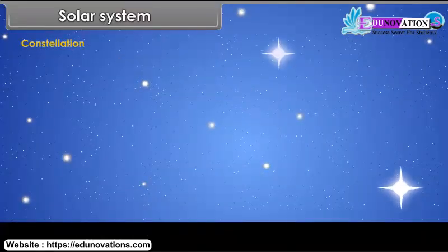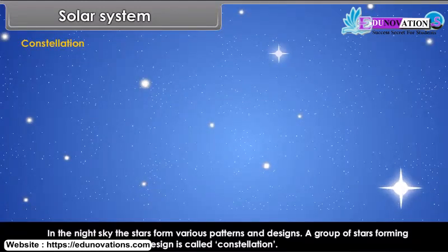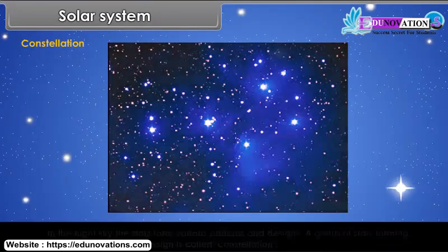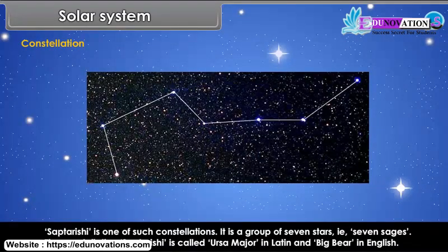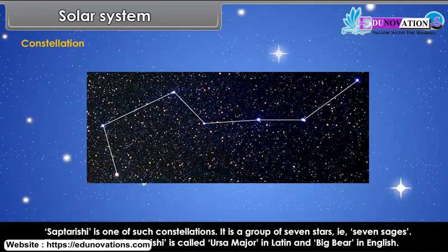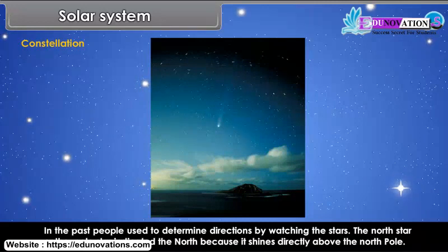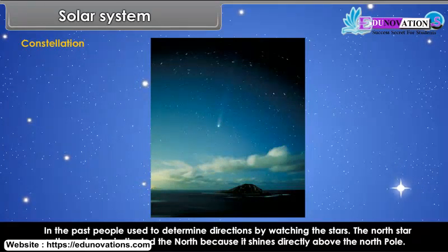In the night sky, the stars form various patterns and designs. A group of stars forming a particular pattern or design is called a constellation. Saptarashi is one such constellation — a group of seven stars, or seven sages. It is called Ursa Major in Latin and Big Bear in English. In the past, people used to determine directions by watching the stars.